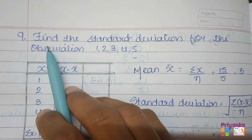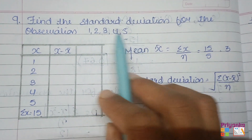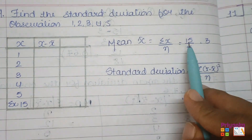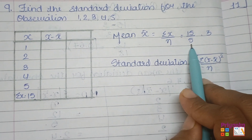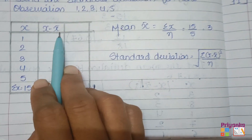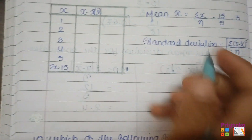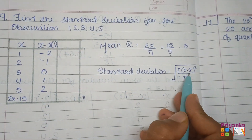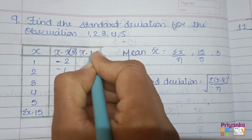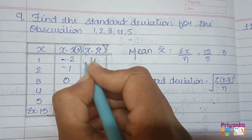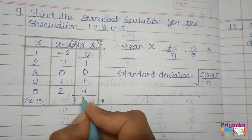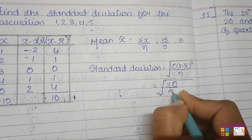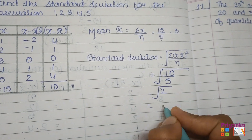Question 9: find the standard deviation for the observations 1, 2, 3, 4, 5. Sigma x = 15, mean = 15/5 = 3. Values of (x - x̄): -2, -1, 0, 1, 2. Squaring these: 4, 1, 0, 1, 4. Total = 10. Variance = 10/5 = 2. Standard deviation = √2 = 1.42.